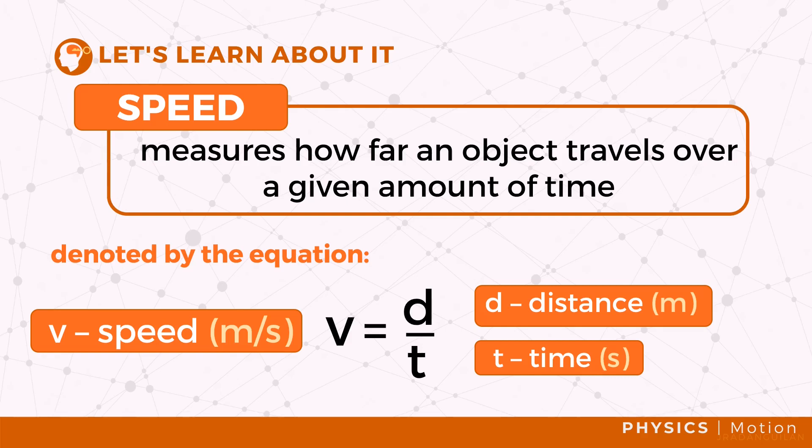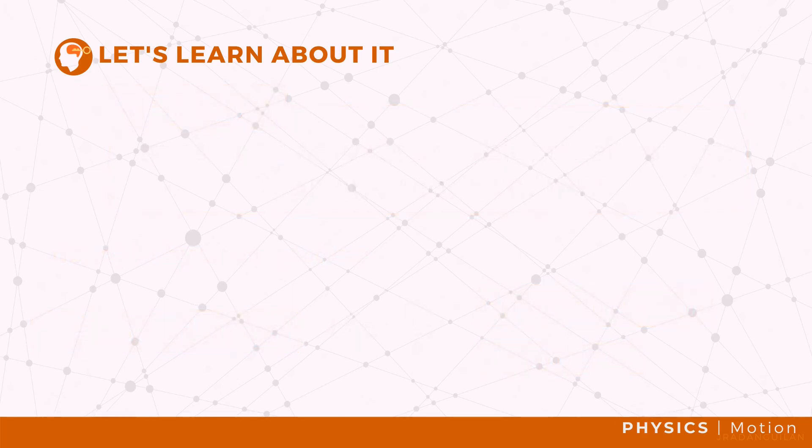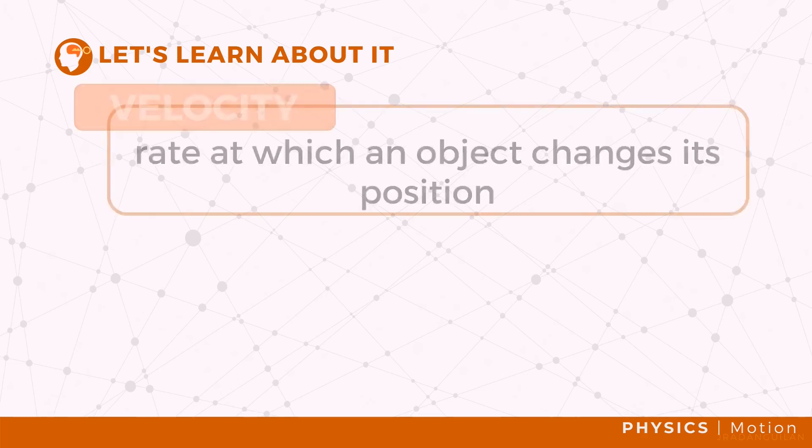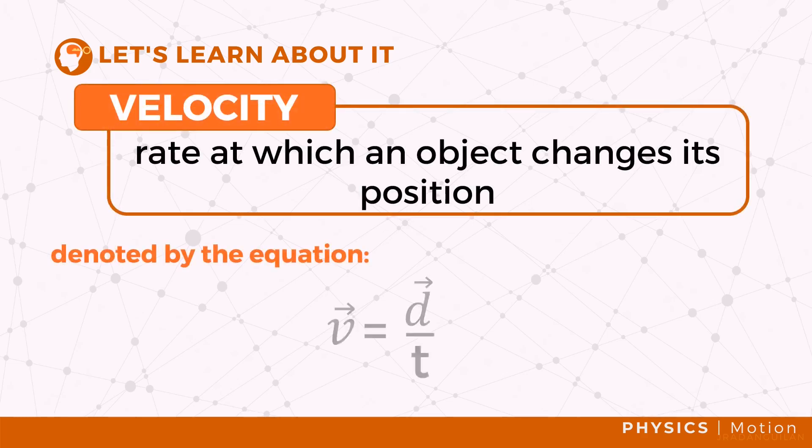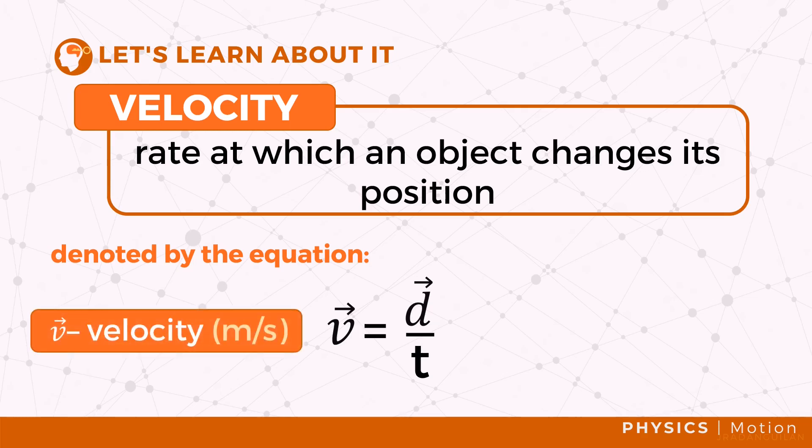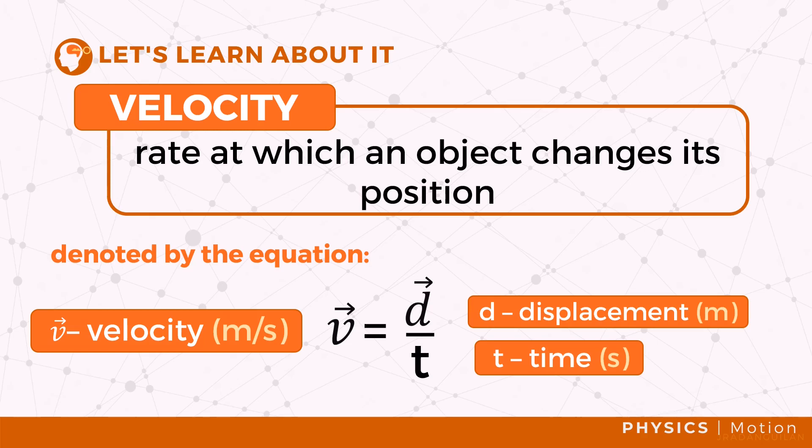The terms speed and velocity are often interchanged in ordinary language. In physics, however, you must take note of the difference between these two quantities. Speed is simply a positive number measured in a distance per unit of time. Meanwhile, velocity is used to indicate both the magnitude of how fast an object moves and the direction in which the object is moving to.